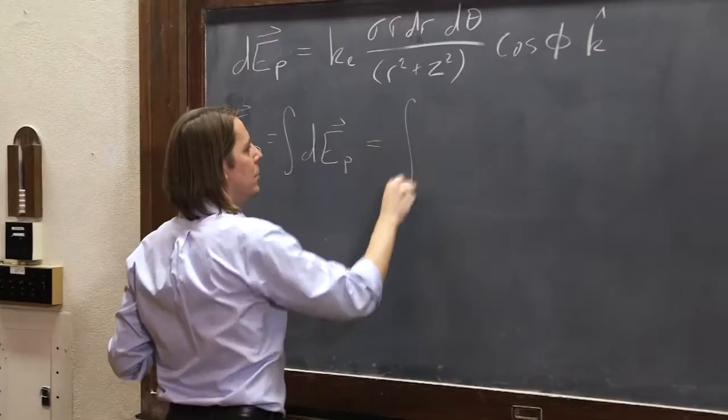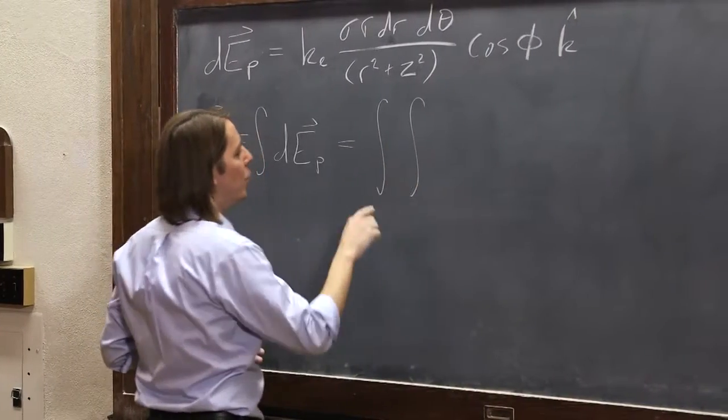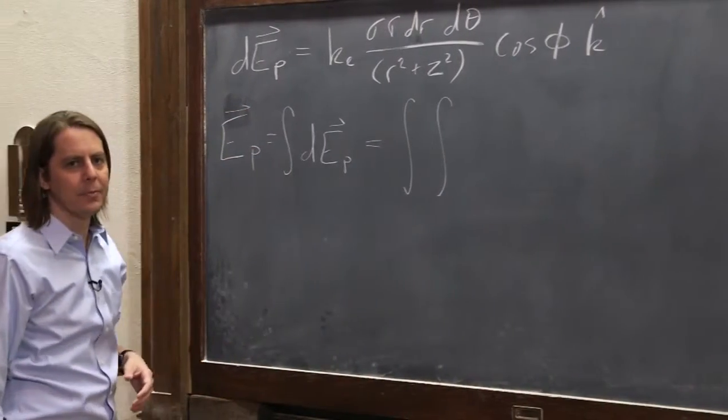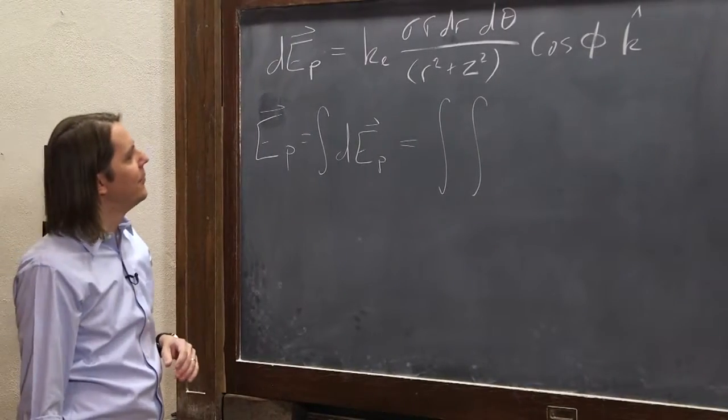We have to actually have two sum symbols. One is for dr, and one is for d theta. We'll work on their limits in a minute. For now, let's just go ahead and write it.